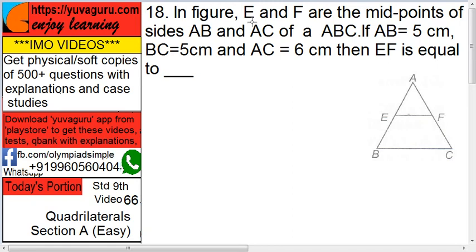In the figure, E and F are the midpoints of AB and AC of triangle ABC. If AB equals 5 cm, BC equals 5 cm, and AC equals 6 cm, then the length of EF is equal to?